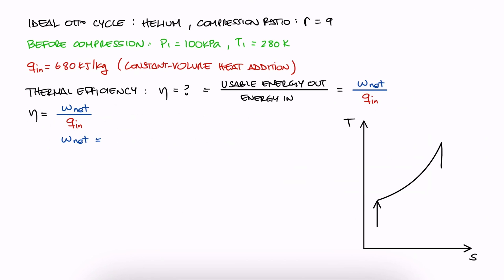From energy conservation, we see that the net work out, which would be the work coming out at the expansion minus the work needed at the compression, is equal to the difference between Q in and Q out. The Q in term we have, and we have to calculate Q out.